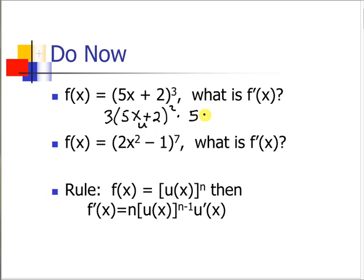So if we call this u, this would be u'. So on our next one, just to refresh, our derivative is shown here, we subtract 1 from the exponent and then times u' which would be 4x.